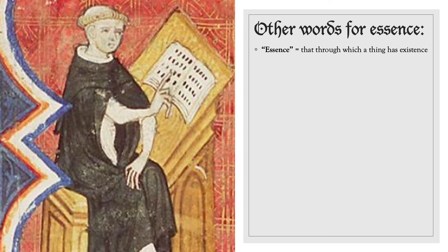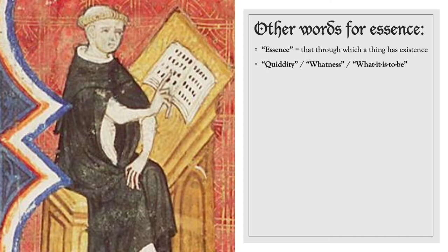Essence is that through which a thing has existence. Another word for essence is quiddity, or whatness, or 'what it is to be'. The phrase 'what it is to be' is a technical phrase coined by Aristotle. In order to abbreviate this phrase, other later authors used the word 'whatness' or 'quiddity'. Whatness and quiddity are exactly the same as one another — the word 'quid' in Latin just means 'what'. So quiddity is a transliteration of the Latin word 'quidditas', whereas whatness is a translation of the same meaning without resembling the Latin.